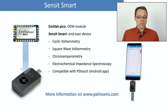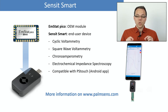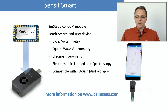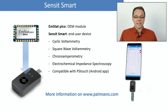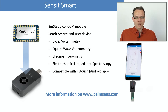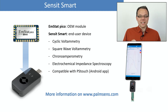The Sensit Smart is based on the EmStat Pico, which is an OEM potentiostat module. You can use that module to build it into your own systems and have your own potentiostat without developing one yourself. Based on this very small module, we made the Sensit Smart, which is a USB-stick sized potentiostat that can perform the most common electrochemical techniques like cyclic voltammetry — as shown in previous webinars — chronoamperometry, and today we're going to look at electrochemical impedance spectroscopy.